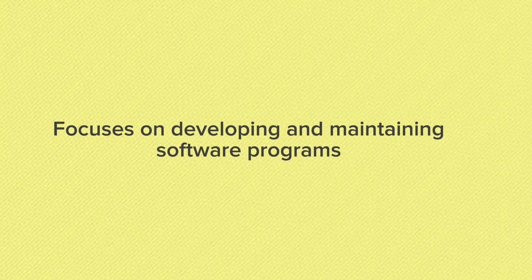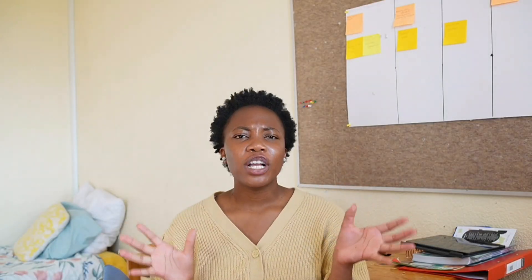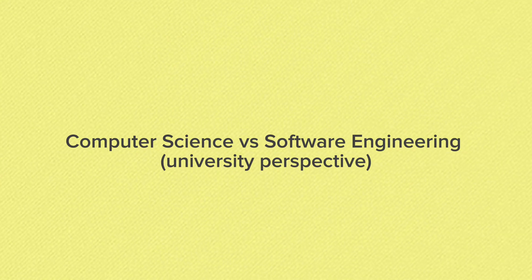Now let's define 'software engineering.' Software engineering focuses on developing and maintaining software programs. Those software examples I mentioned — software engineers develop them, maintain them, and test them. Let's now talk about the difference between computer science and software engineering in the context of university — what each degree contains.